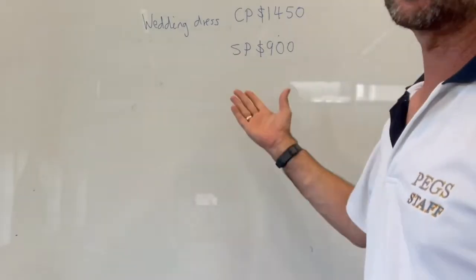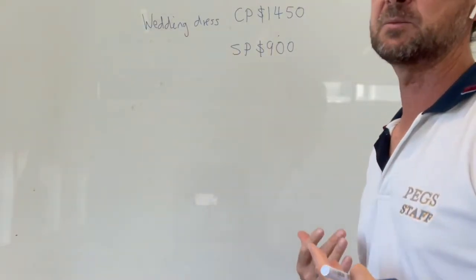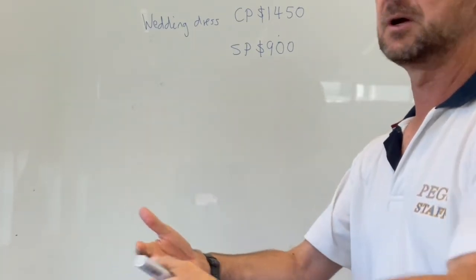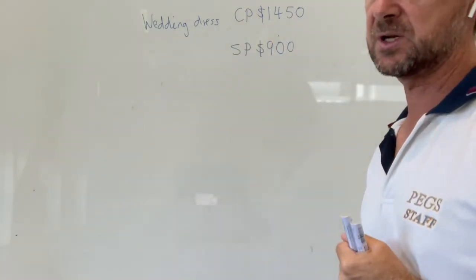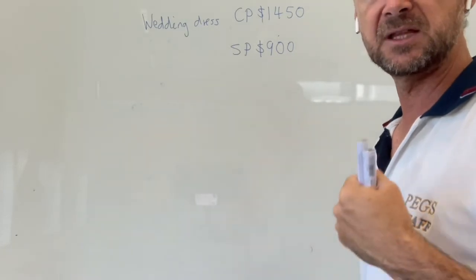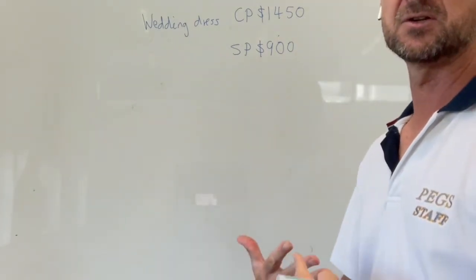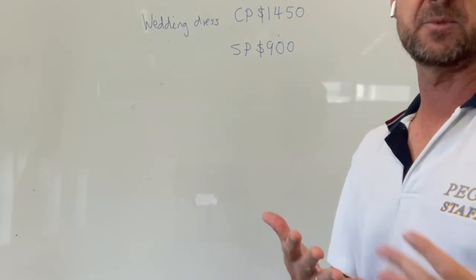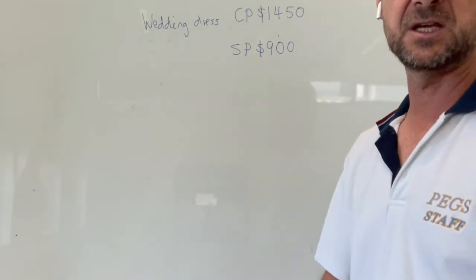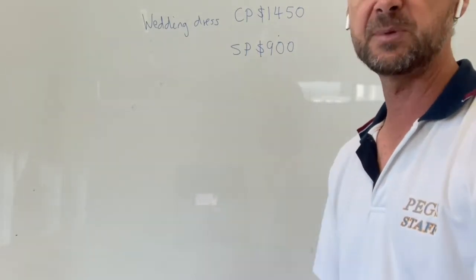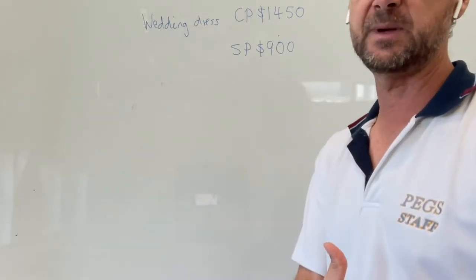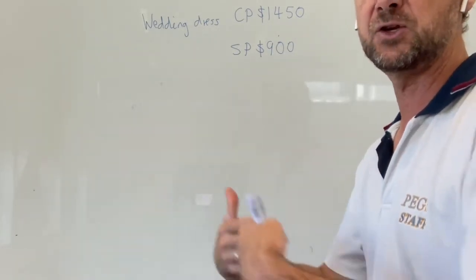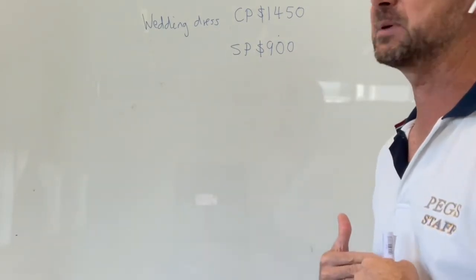In this example, we've got a case where someone purchased something and then resold it. They purchased a wedding dress for $1,450 and then sold it for $900, so clearly they've made a loss. This is common when selling things on Marketplace or eBay, where you've paid a certain amount, used the item, and it's gone from new to used — and you're reselling it to get some money back.